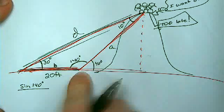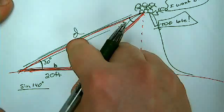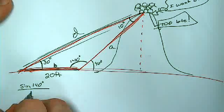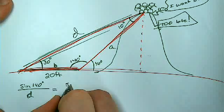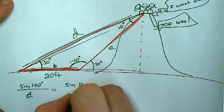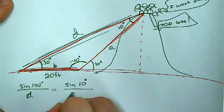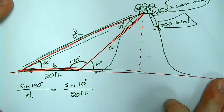So sine of D, sorry, sine of 140 over D, the side opposite it, it's going to be the sine of what? 10 degrees over 20 feet. Now I know how to solve that, we've been practicing it.